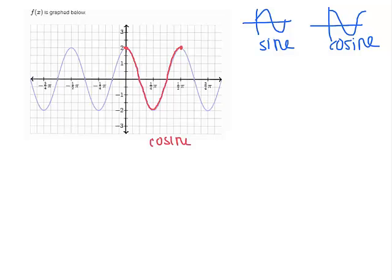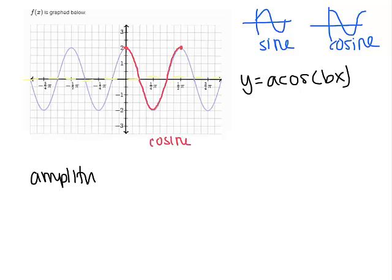So the first thing we're going to figure out is what our amplitude is. Okay, so it looks like that midline again, for these basic ones, our midline is always going to be at y equals 0. And it looks like I'm going up to 2 and down to negative 2. Alright, so our amplitude is going to be 2 units.